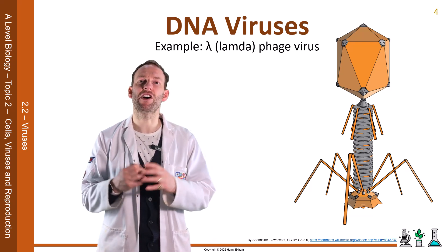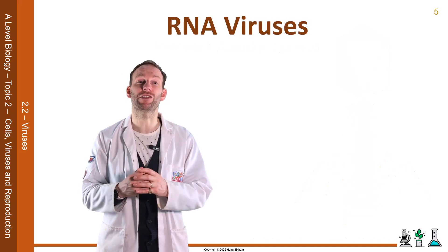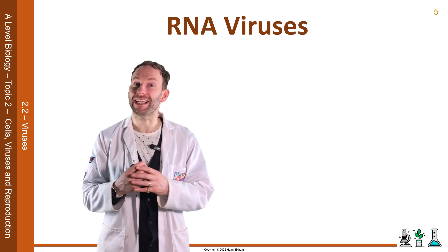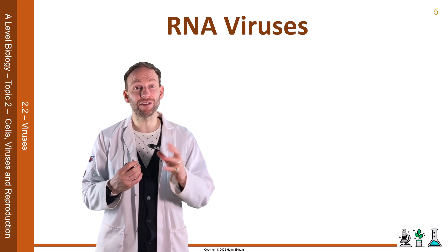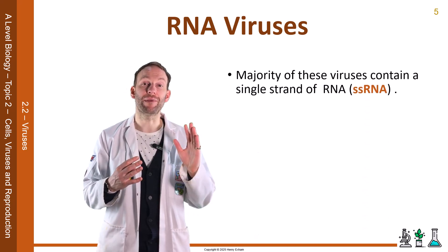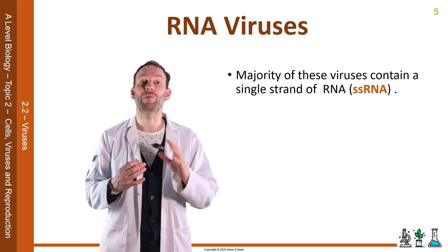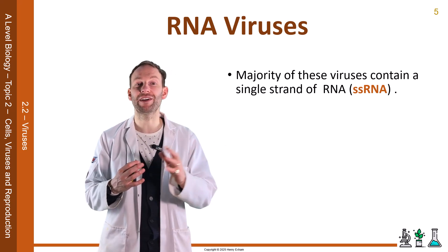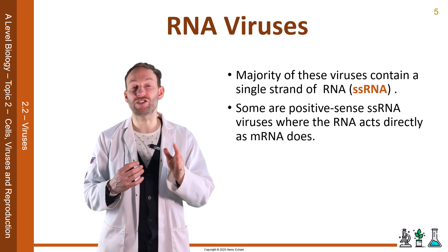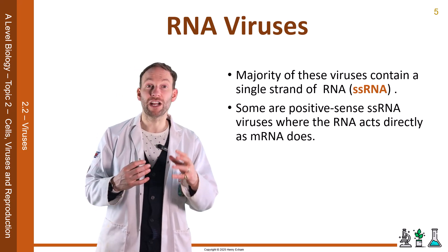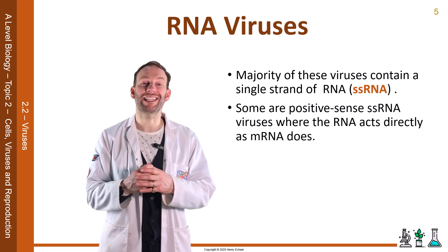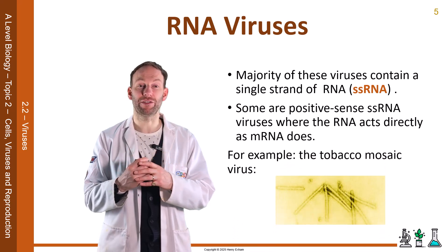The second type of viruses are RNA viruses. These account for about 70% of viruses. They contain RNA and are very likely to mutate. The majority contain a single strand of RNA, so we call them SS-RNA viruses. Some are positive-sense SS-RNA viruses, where the RNA acts directly as messenger RNA does, and the viral RNA can be translated directly into proteins.